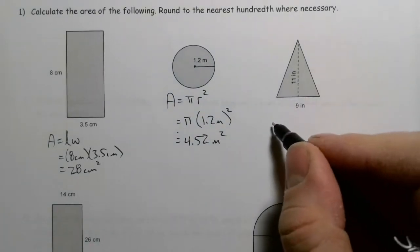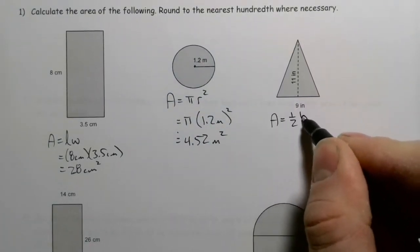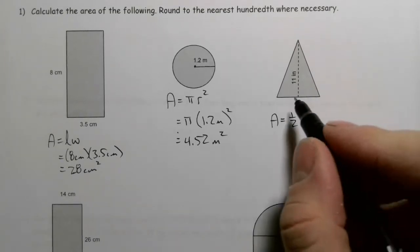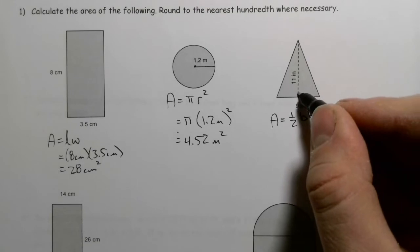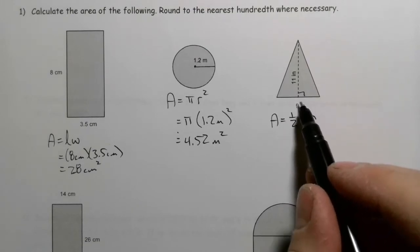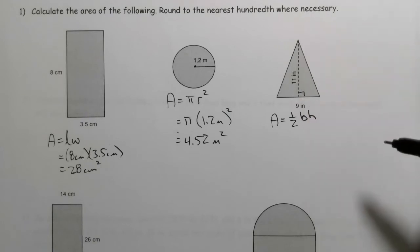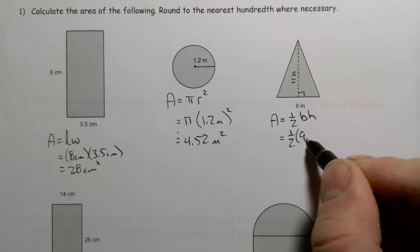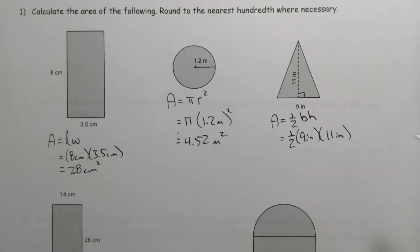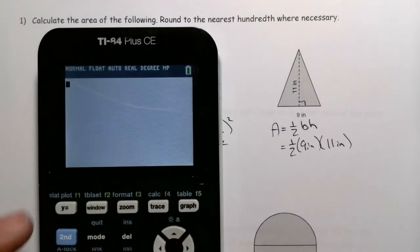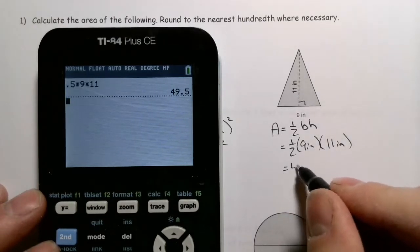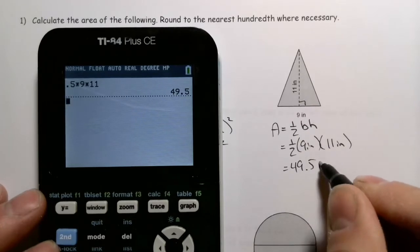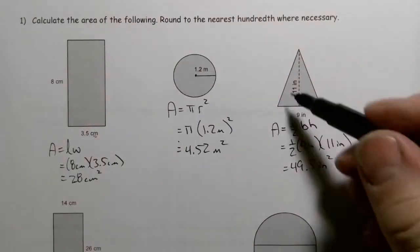For a triangle, the area is one-half times the base times the height, where the height is the perpendicular distance from the base straight up to the third vertex. So here it's one-half times 9 inches times 11 inches — that's 0.5 times 9 times 11, which gives us 49.5 square inches.